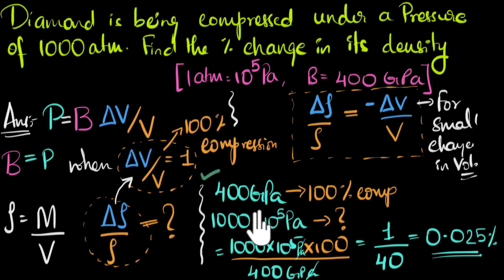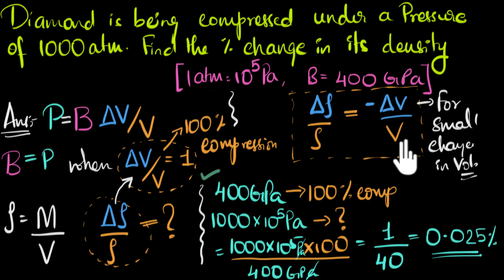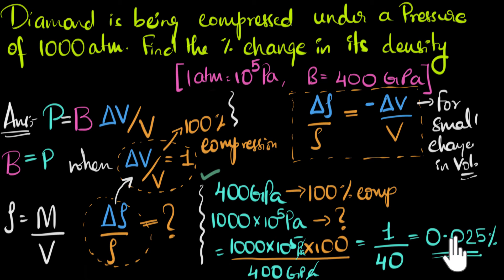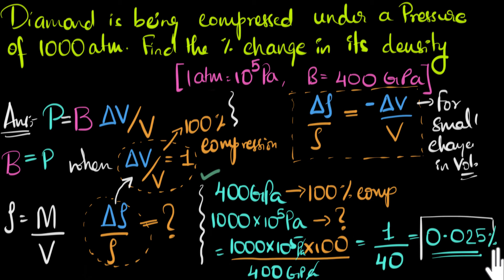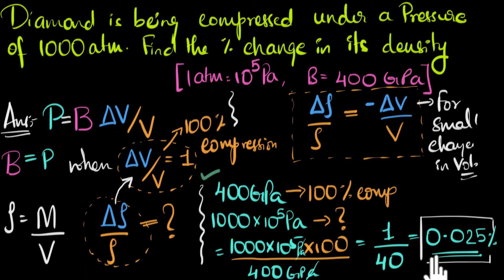What we have calculated is delta V over V, the amount of compression. But since we saw that the percentage change in compression is the same as the percentage change in density, we can also say the percentage change in density is 0.025. Since the volume decreased by this amount, the density would have increased by this amount. That is our final answer.